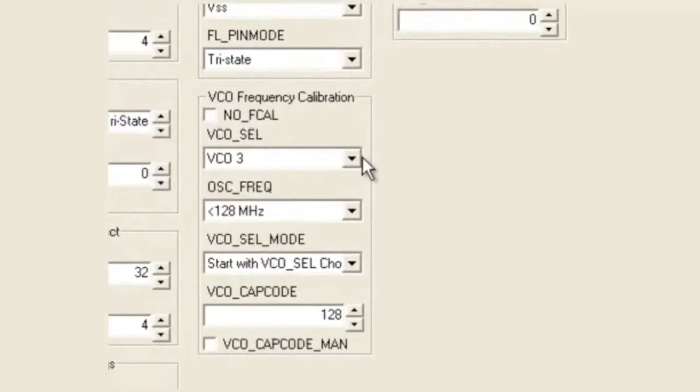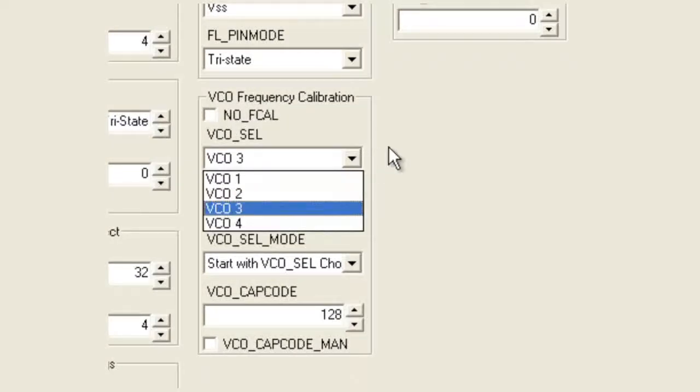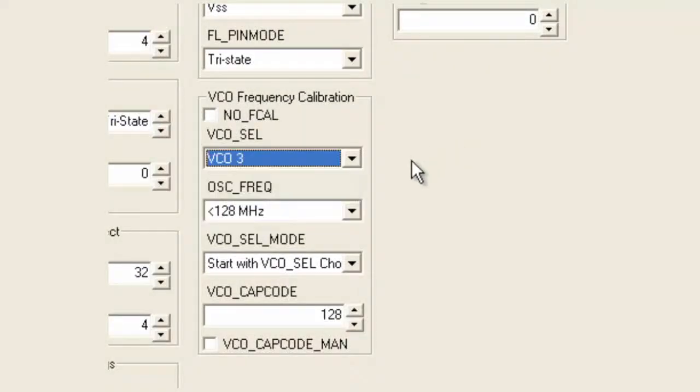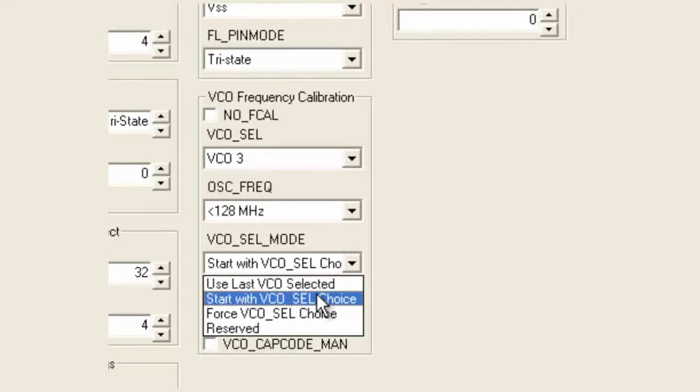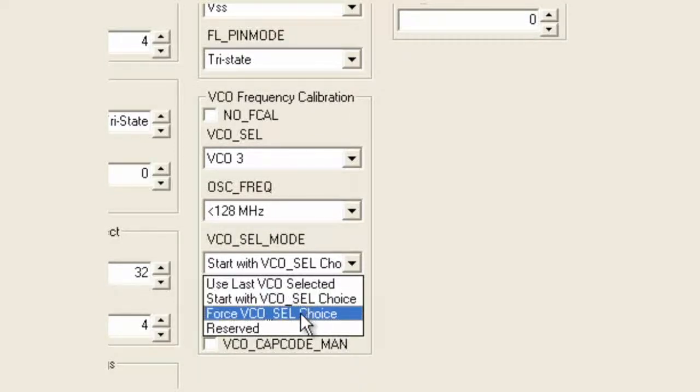The 2581 has four cores in its VCO, which it automatically picks whenever the frequency is changed. The way that it picks can be set by this particular programming bit. You can choose to pick the last VCO selected, which would be good for small frequency changes. You can also choose it to start with a VCO selected, which would be good for large frequency changes and is very useful to get the best possible lock time. You can also force it, if you want, as a diagnostic.